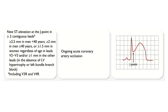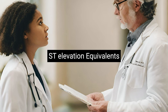ST segment elevation is measured at the J point. For it to be diagnostic, elevation in at least two contiguous leads is required. In V2 and V3: women need ≥1.5 mm regardless of age; men younger than 40 need ≥2.5 mm; men 40 years and older need ≥2 mm. In all other leads, the threshold is ≥1 mm, in the absence of left ventricular hypertrophy or left bundle branch block.